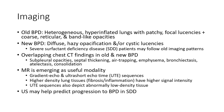MRI is a useful imaging modality. Gradient echo and ultrashort echo time sequences — higher density lung tissue have higher signal intensity. UTE sequences also detect abnormally low-density tissue. Ultrasound may help predict progression to bronchopulmonary dysplasia in surfactant deficiency disease.